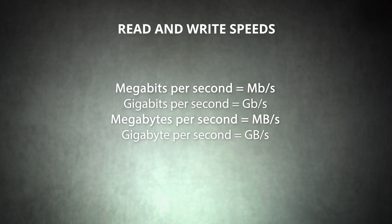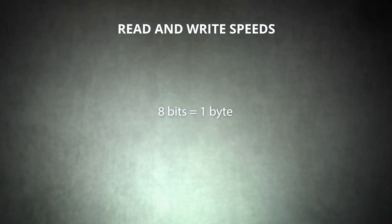However, you'll often see speeds written as megabytes per second or gigabytes per second. Pay attention to the difference. Since bytes are eight times larger than bits, speeds notated in bytes may appear lower at first glance, but they may actually be faster.